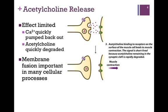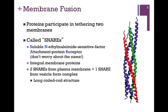Membrane fusion is important in many cellular processes, so let's look at that more particularly. There are proteins that participate in tethering the two membranes — the two surfaces. These proteins are called SNAREs, an acronym for Soluble N-ethylmaleimide Sensitive Factor Attachment Protein Receptor — a rather horrible name. They're integral membrane proteins, and in this case two SNAREs from the plasma membrane and one from the vesicle form the complex.